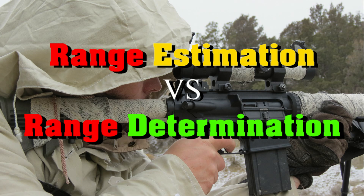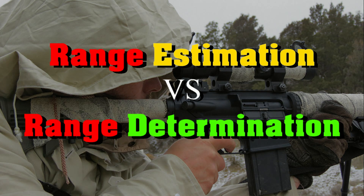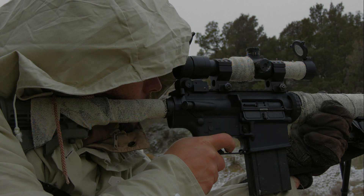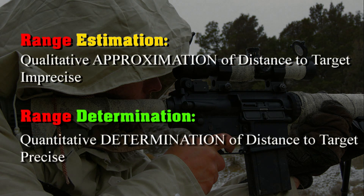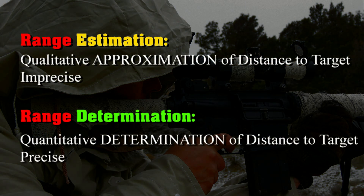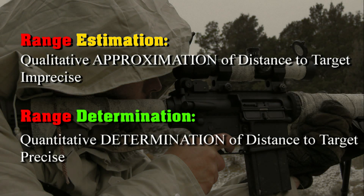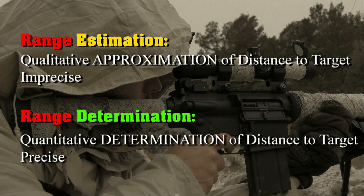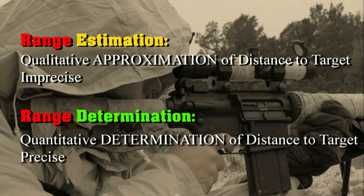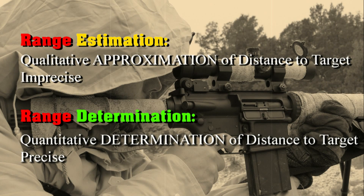In the last couple videos we discussed some different range estimation methods. Estimation implies that you're going to get a qualitative value, which means you're getting a ballpark idea of how far the target is. That's going to work okay for most sized targets out to four, maybe even 500 meters. On a five-inch target, you only have to be within about 100 meters of the target as far as the precision of your range estimation before you start having problems missing the target due to a wrong range input in your firing solution.